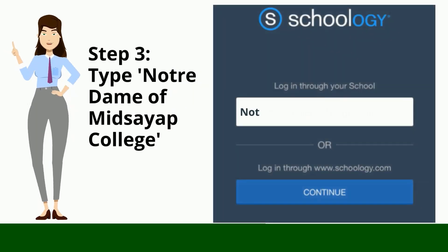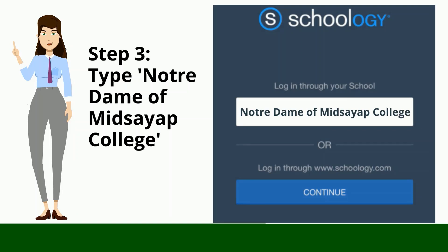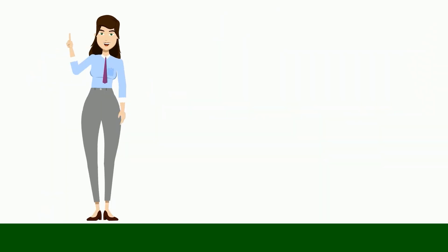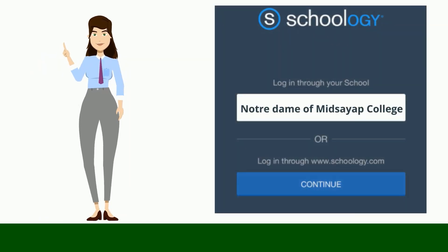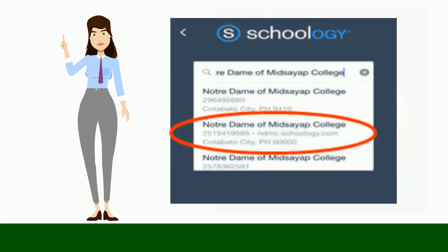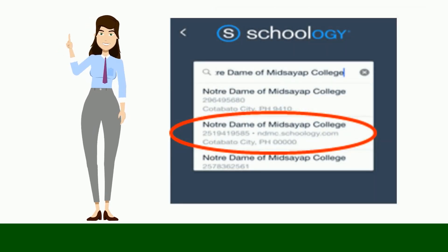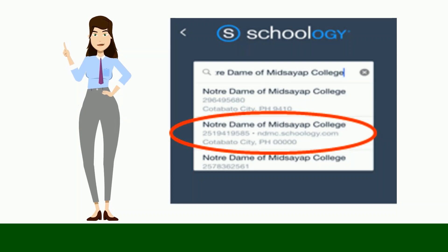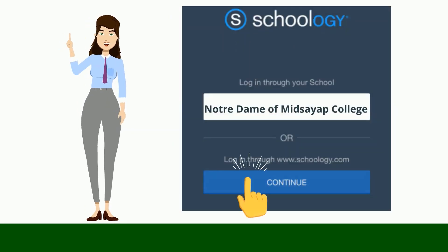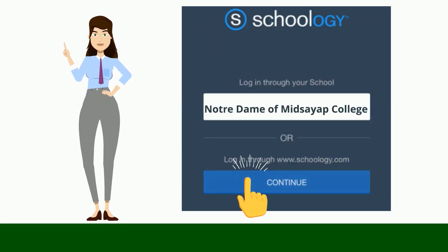Type 'Notre Dame of Midsayap College.' Once you type NDMC, you will be provided with three options. Choose the second one, having the website ndmc.schoology.com. Tap 'Continue' to log in through app.schoology.com.